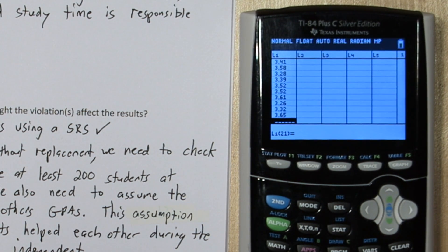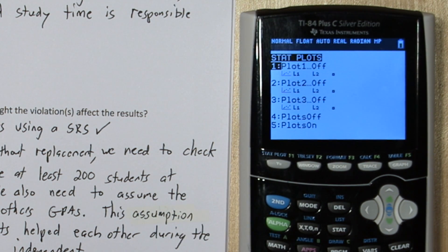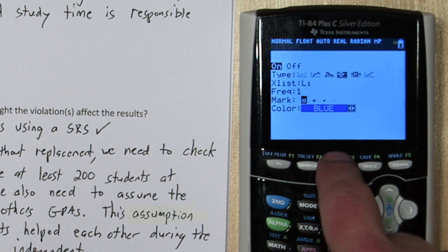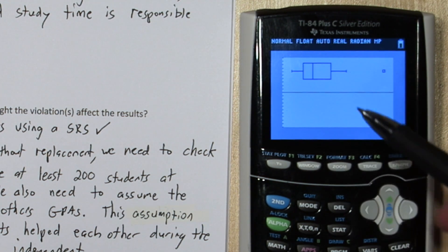Now we can quickly check for outliers by making a modified box plot. Press second and then y equals. This is our stat plot menu, and we're going to press enter on plot 1. We're going to turn it on, and for type we're going to choose modified box plot. We're going to use list 1, and press zoom, then 9.